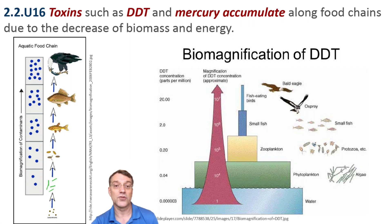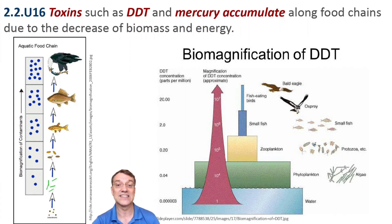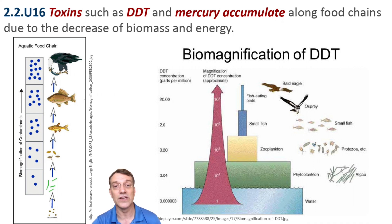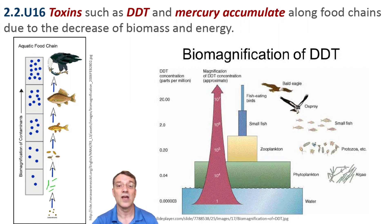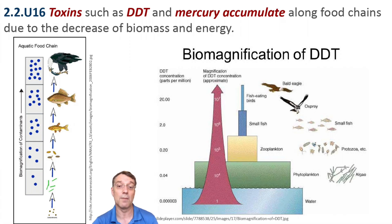This diagram shows PCB concentrations increasing dramatically from 0.000002 milligrams per liter in seawater to 160 milligrams per kilo in marine mammals — an 80 million-fold increase in concentration. This high concentration of toxins and heavy metals at upper trophic levels is why many doctors advise pregnant women and nursing mothers to avoid eating tuna and other top marine predators.